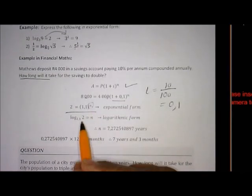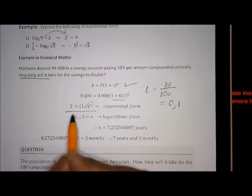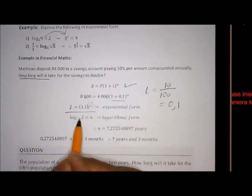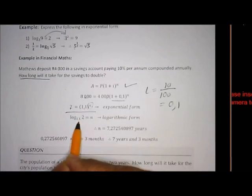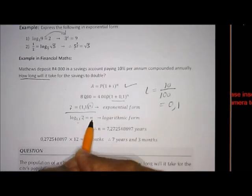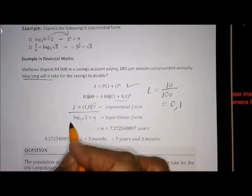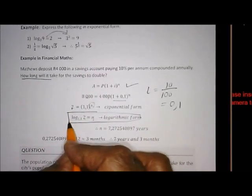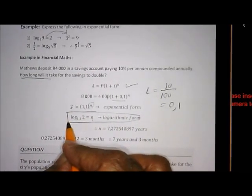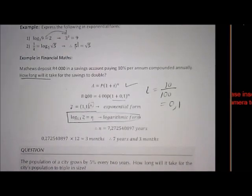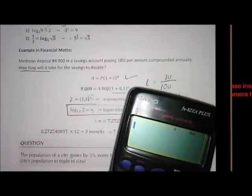So to find N, logs will come in handy. So the number is 2, so the log of the number, the base is 1.1, is the exponent. And that is how we can make N the subject. Can you see, guys? And then on the calculator we can quickly do that now.